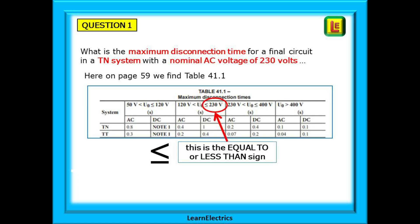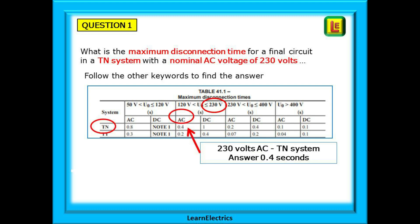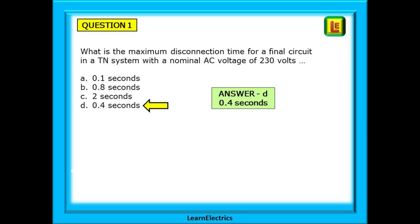Here is Table 41.1 and we can start to use our other keywords. You need to get used to this symbol — it looks like a letter V on its side with an extra line. This symbol says 'equal to or less than'. The nominal voltage must be equal to or less than 230 volts. This is nominal voltage, even though the actual voltage may be 240 volts or more. For any domestic final circuit, always assume 230 volts nominal. If we follow the keywords, we will see that we have an AC column and a TN row. Where they cross is our answer, and we should select choice D, 0.4 seconds.